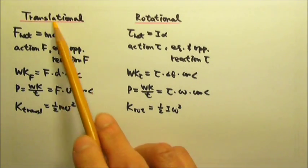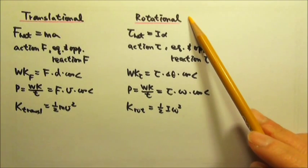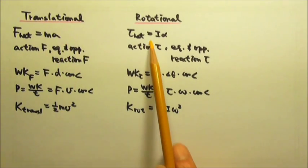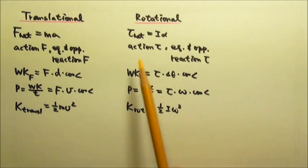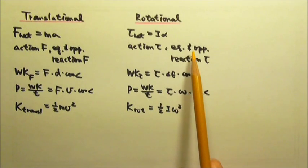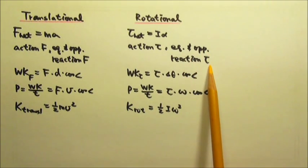For translational dynamics we have these. The rotational version will be net torque equals I alpha. For every action torque there is an equal and opposite reaction torque.